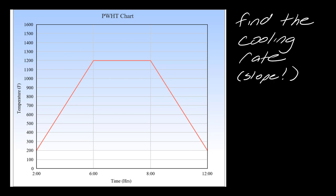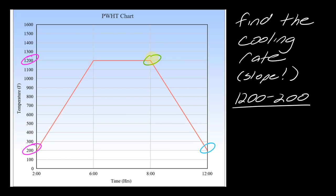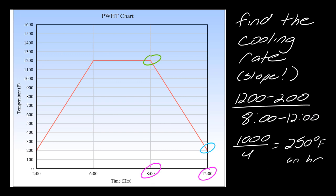Now find the cooling rate, which is still just a slope. Pause the video, find the cooling rate, then hit play. I select two points for the cooling side. Reading off the y-axis: 1200 and 200, so 1200 minus 200. For the x-axis, I have eight o'clock and twelve o'clock. Maintaining order — green point minus blue point — that's eight o'clock minus twelve o'clock, which is 4 hours. The cooling rate comes out to 250 degrees Fahrenheit per hour — the same rate in this case.